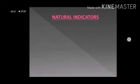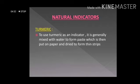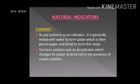Let us understand another important natural indicator — turmeric. Turmeric is widely used in our kitchens. To use it as an indicator, we mix turmeric with water and prepare a paste. This paste can then be applied on paper and dried. Thin strips can then be prepared from that paper and used as indicators.